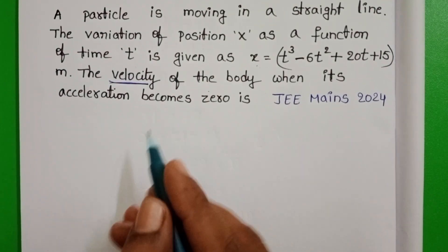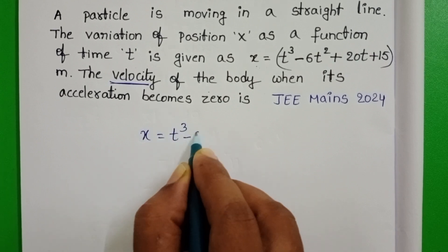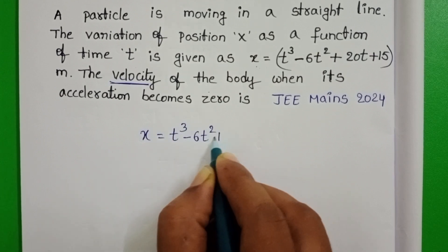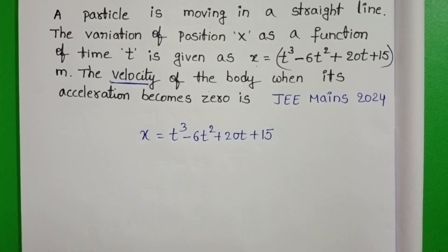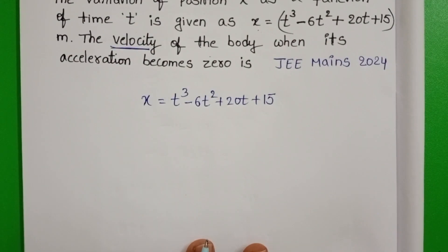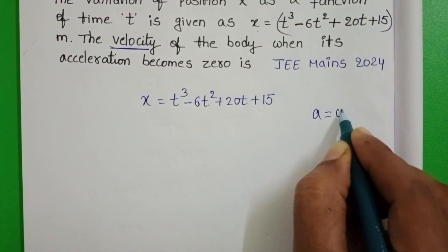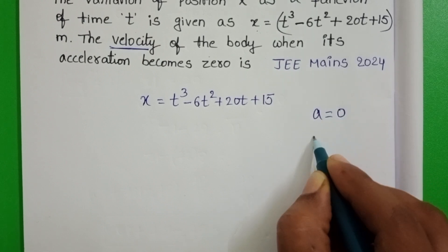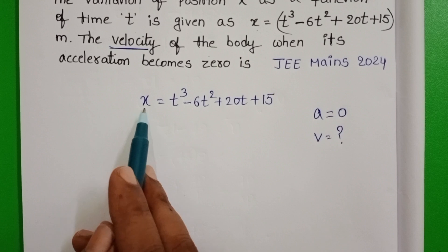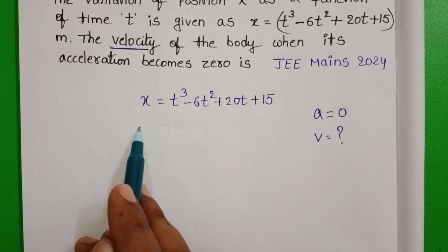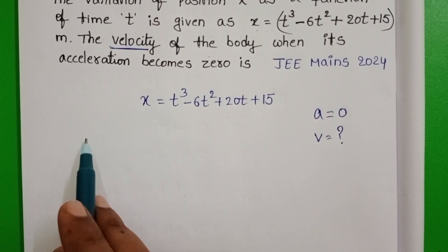The given displacement is x equals t cubed minus 6t squared plus 20t plus 15. This is the displacement of the particle as a function of time. When acceleration equals zero, at that instant we have to find the velocity of the particle. We know that the rate of change of displacement is called velocity, and the rate of change of velocity is called acceleration.